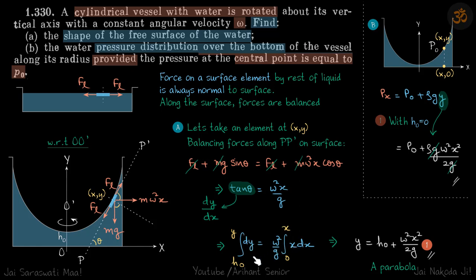Taking similar terms to one side and integrating: y varies from h₀ to y, and x varies from 0 to x. Putting in the limits, we get y = h₀ + ω²x² / 2g, which is a parabola. So the curve formed by the rotation of water is a parabola.